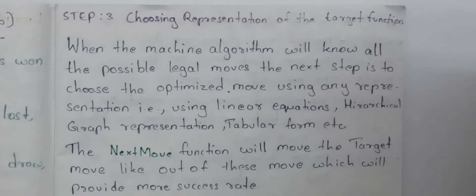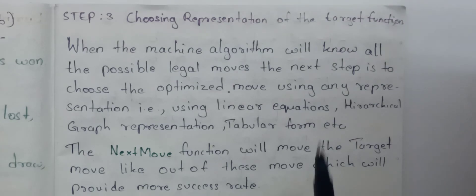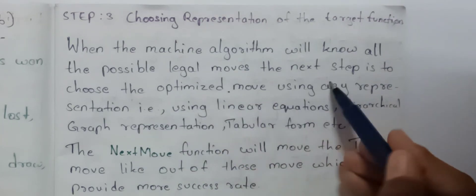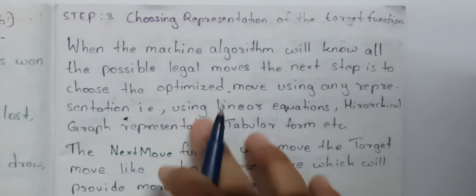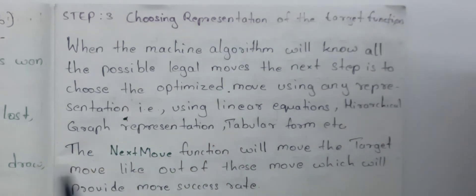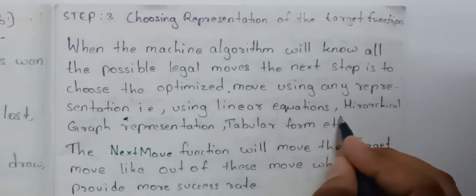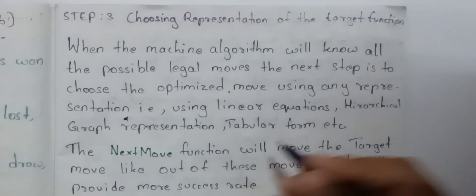We need to find different moves and optimize the next move — select the best move. To choose the optimized move, we can use any representation such as linear equations, hierarchical graph representation, tabular form, etc.